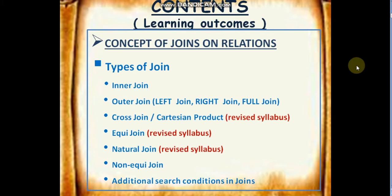The contents we are going to cover today is the concept of joins on relations. The learning outcomes include types of joins: inner join, outer join (of 3 types — left join, right join, full join), cross join or Cartesian product, equi join, natural join, non-equi join, and some additional search conditions in joins. Due to the COVID-19 pandemic, the CBSE syllabus was revised to include cross join, Cartesian product, equi join, and natural join.